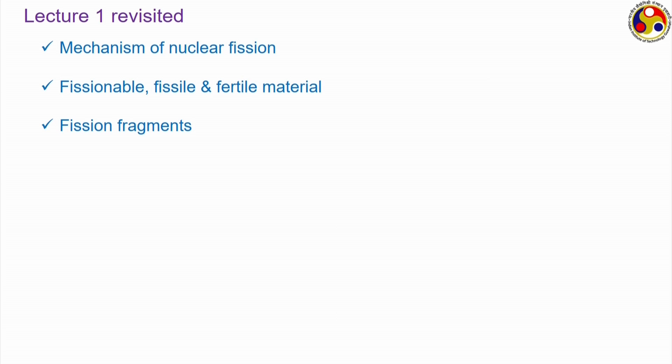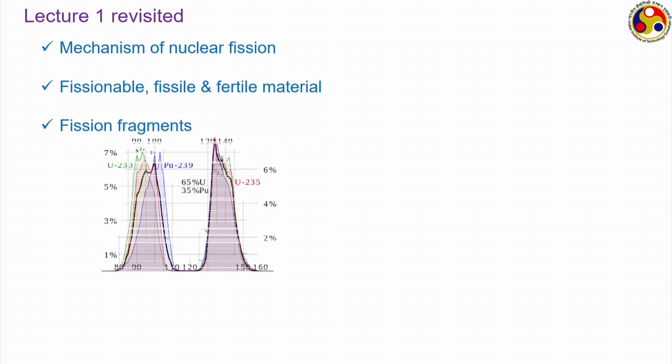The next topic we discussed is fission fragments — the two daughter isotopes produced by the fission of a fissile isotope. Fission fragments are generally radioactive in nature and therefore go through several steps of decay. Another interesting fact is that fission fragments generally vary in their mass numbers; it is highly unlikely that both will have the same mass number. The difference between their mass numbers reduces with increase in the mass number of the parent isotope — the difference for uranium-233 fission will be higher than for plutonium-239.